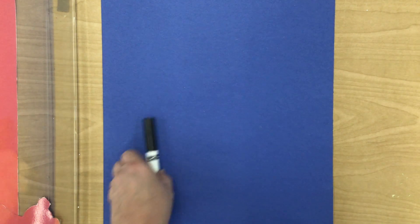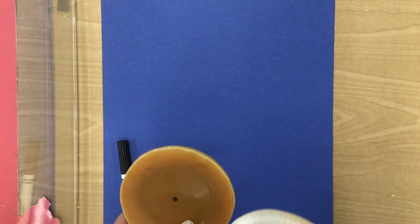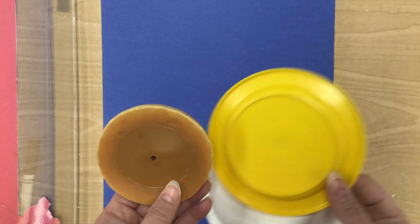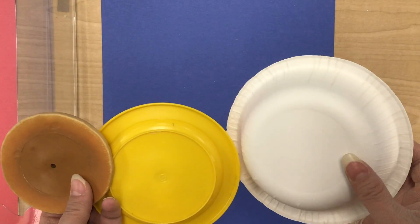The next thing you need to do is you need to find three things that are shaped like a circle. But the trick is you need different sizes. You need a small, a medium, and a large.